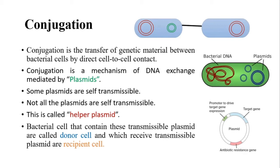Some of these plasmids are self-transmissible, meaning they can promote transfer of their own plasmid as well as other plasmids. But not all plasmids are self-transmissible because some plasmids lack the gene which promotes this transfer function. Such plasmids can only be transferred if another plasmid in the cell carries the gene for transfer function, and this other plasmid is called a helper plasmid because it is capable of mobilizing another plasmid.